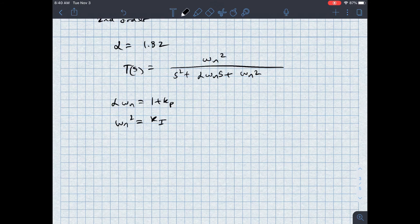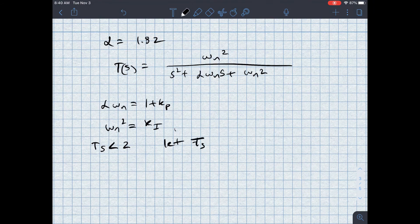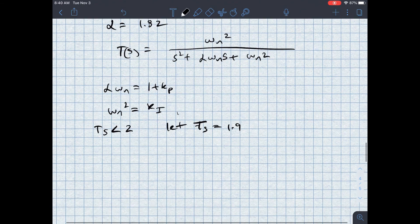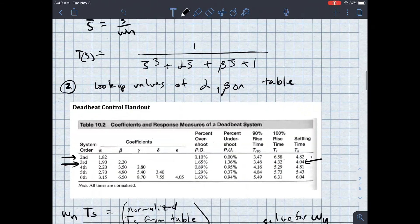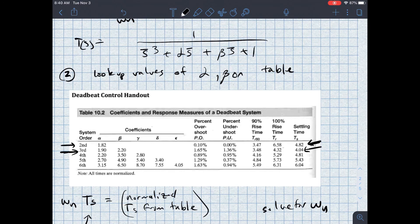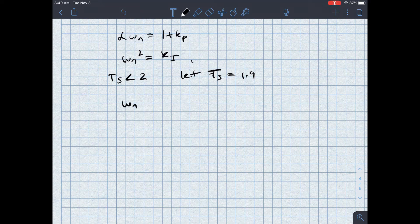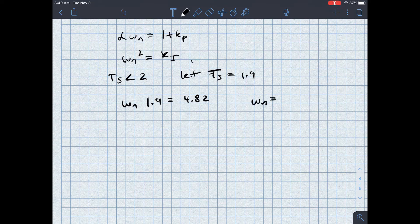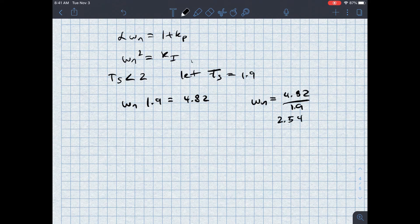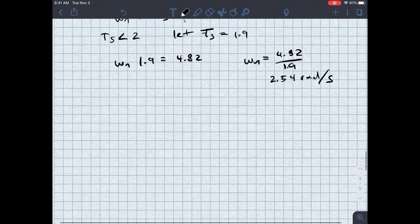So that's what I know. I also know that TS needs to be less than 2. Let's let TS be equal to 1.9. That's less than 2. So then I go back up to my table and I look at the settling time normalized. It's 4.82. So I know that omega N times 1.9 is equal to 4.82. So omega N is equal to 4.82 divided by 1.9, which is 2.54 radians per second.